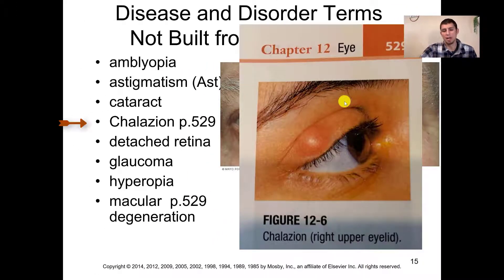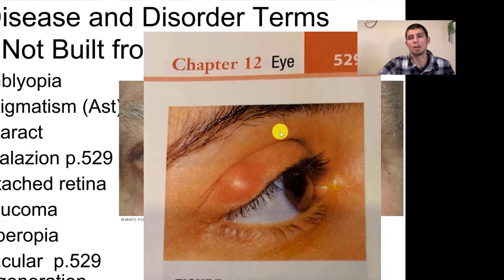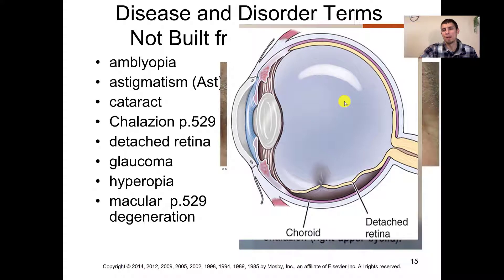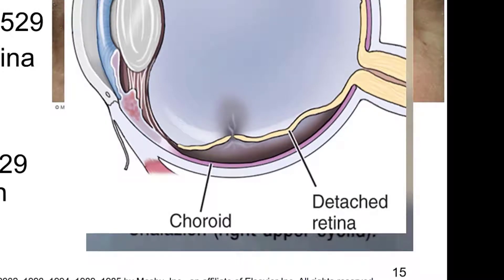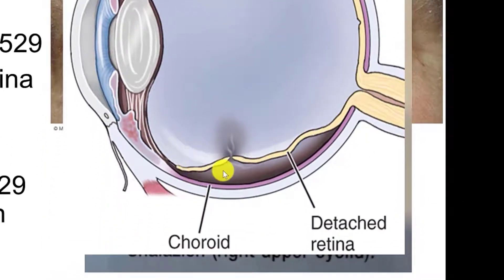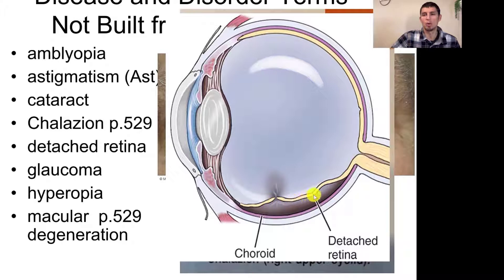A chalazion is basically an obstruction of an oil gland in the eyelid. Going back to the anatomy section, we talked about the meibomian glands, so this would also be considered a meibomian cyst because it's in that oil gland of the eyelid. Here we have an image of a detached retina — the graphic shows the choroid layer and the retinal layer, but the retina is not attached to the choroid down at the bottom as it should be. This can happen for a number of reasons including trauma, and we'll discuss how to fix this in the surgical procedures section.